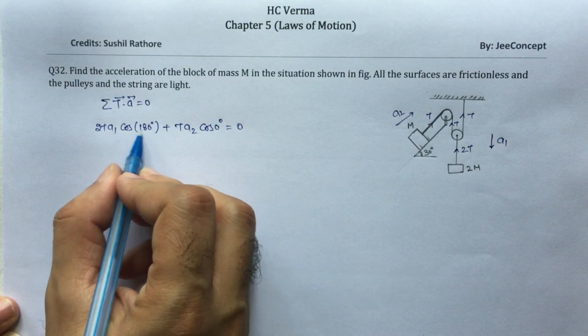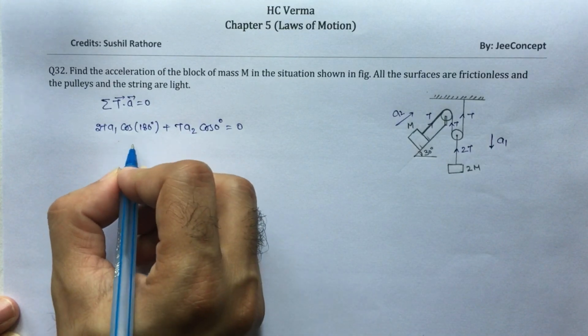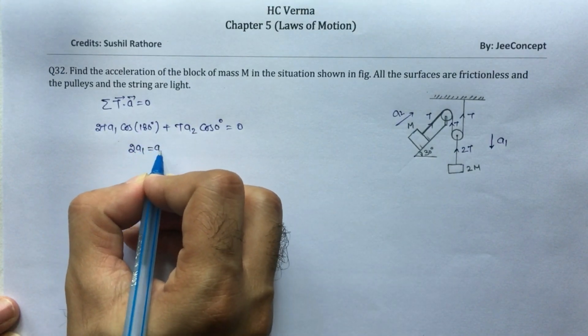From this, after solving, cos(180°) is negative, so we will get 2a1 equals a2. This is the relation between a1 and a2. Say this is equation 1.